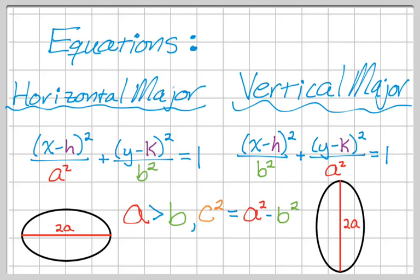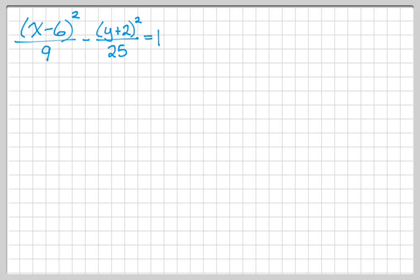All right, so before I go on this video, I'm going to do one example of graphing an ellipse and kind of finding everything. So let's say we have (x-6)² over 9 plus (y+2)² over 25 equals 1.